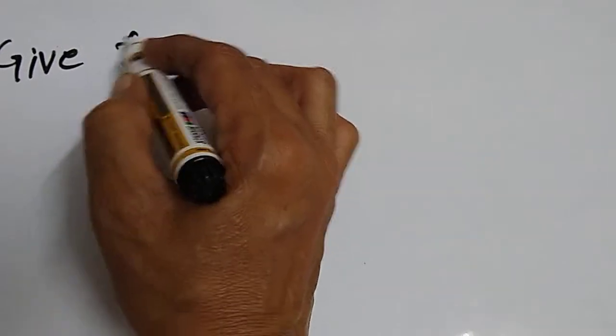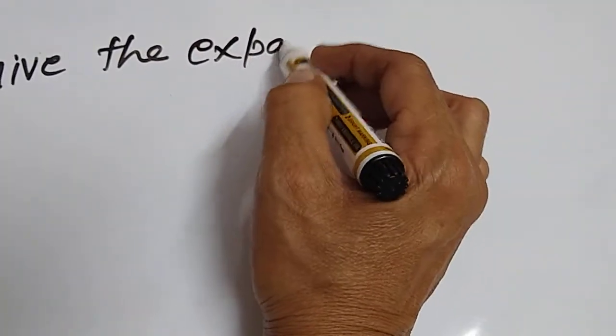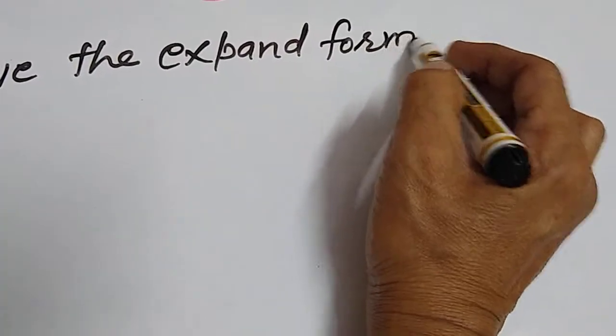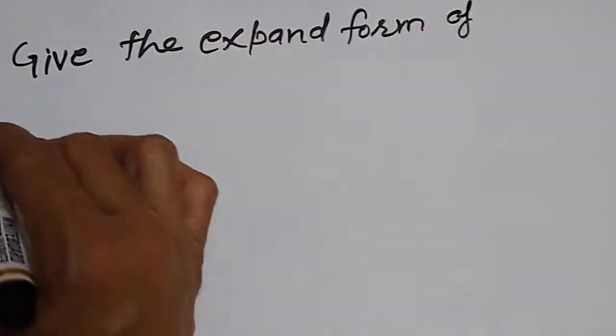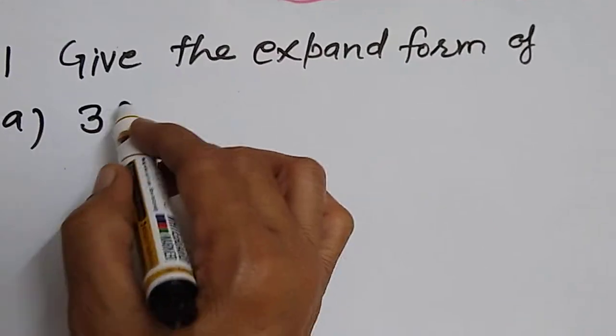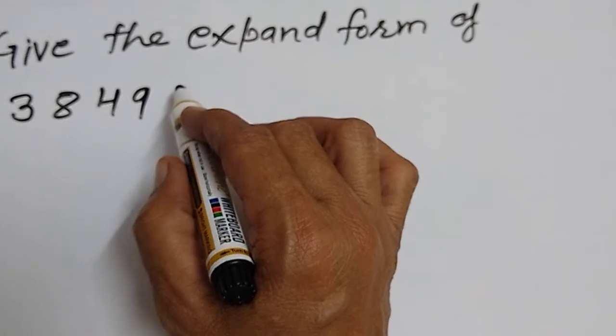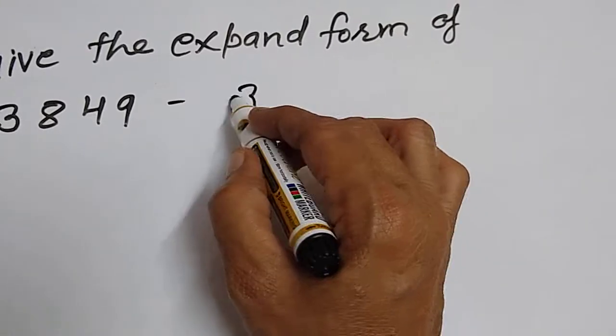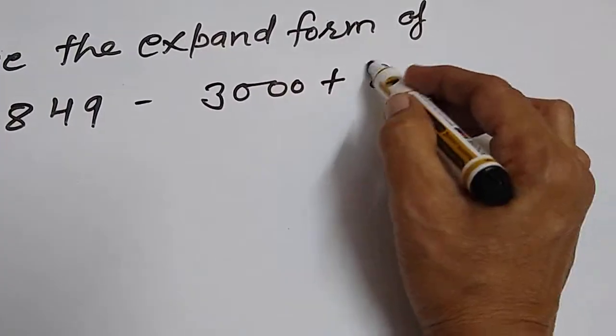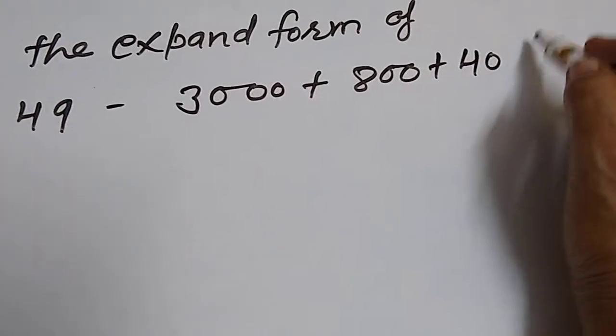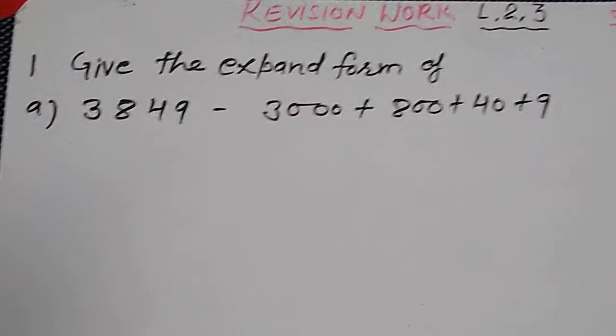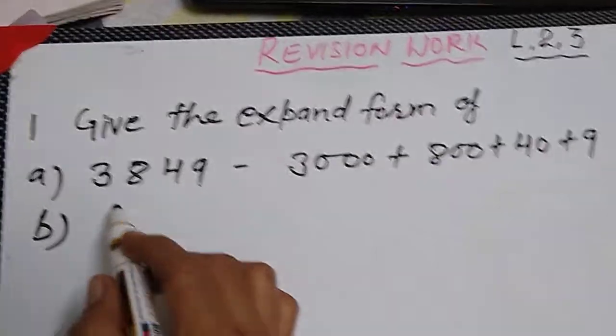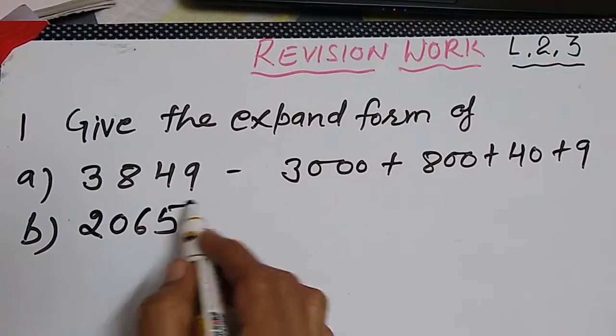Welcome back children. In the revision work we are doing lesson 2 and 3. First question: give the expanded form of numbers. I am writing here 3849, one example I am giving you, others you do yourself. 3000 plus 800 plus 40 plus 9.